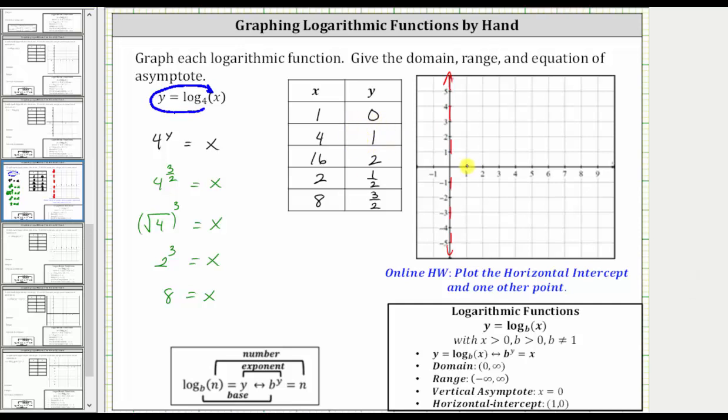So one comma zero is here, four comma one is here, 16 comma two is off the screen, two comma one half is here, and eight comma three halves, or eight comma 1.5 is here.